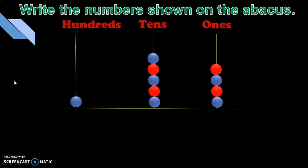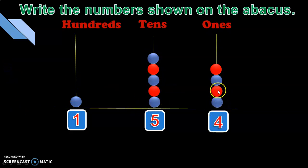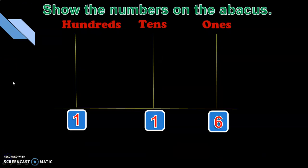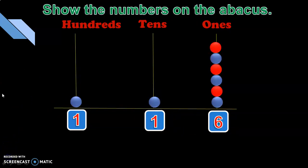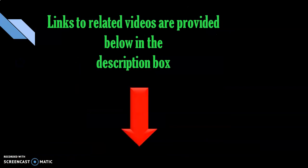Now let us go into a question and answer session. The first type of question is: write the numbers shown on the abacus. Looking at the abacus given: we have one hundred, five tens — one, two, three, four, five — and four ones — one, two, three, four. So this makes one hundred and fifty-four. Another type of question is: show the numbers on the abacus, where you give the number and make the children draw the beads. The answer would be one bead in the hundreds place, one bead in the tens place, and six beads in the ones place, making one hundred and sixteen. For more place value questions, part two of this video has several interesting questions; the link is provided in the description box.